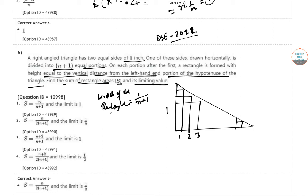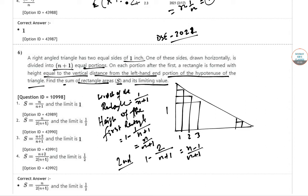So height of the first rectangle is equal to 1 minus 1 by n plus 1, so that is n by n plus 1. Height of the second rectangle is 1 minus 2 by n plus 1, so n minus 1 by n plus 1. In that way, height of the nth rectangle is 1 minus n by n plus 1, so this will be 1 by n plus 1 only.